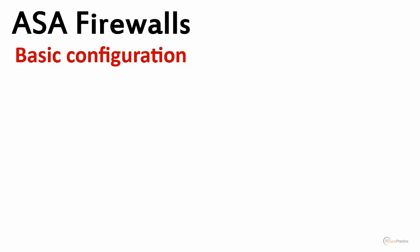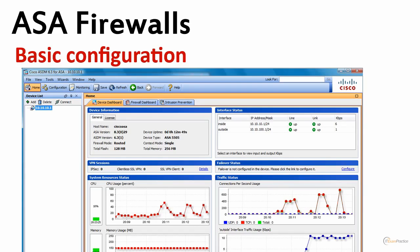ASDM is a piece of software that you put on your firewall — that's the main difference between ASDM and CCP. Cisco Configuration Professional runs on your laptop, while ASDM is on your firewall. The easiest way to run it is to browse to your firewall via HTTPS, and I'll show you that.